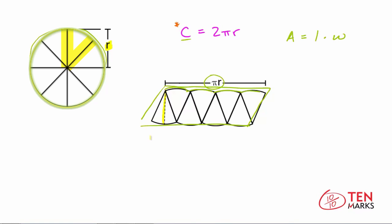If you want to find the area of this parallelogram, you would take the width of r and the length of πr and multiply them together. So area equals length πr times r. Now r times r equals r squared, so the area equals πr². And that's how we get to the area formula for a circle.